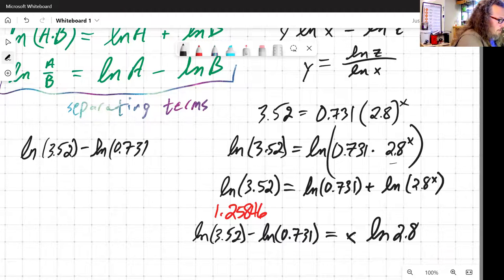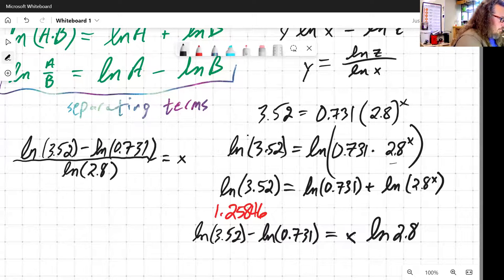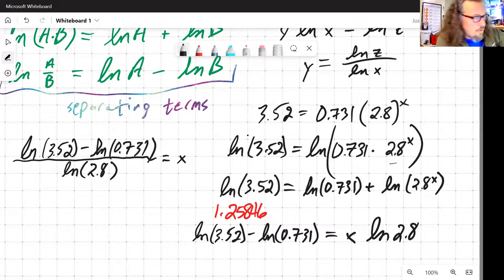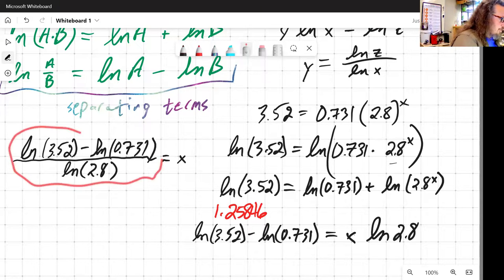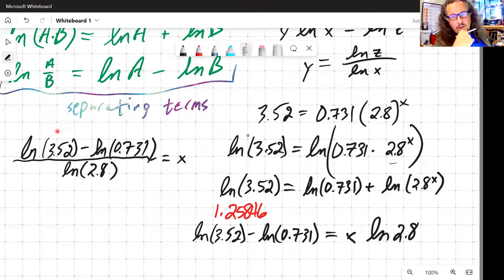And now we're pretty much done. So natural log of 3.52 minus natural log of 0.731 divided by natural log of 2.8 is equal to x. And at that point we can just plug things in and evaluate them. If you really want to, you can go ahead and put those back together, use those relationships to collapse that big term back down a little bit. But again, it's just a number, so we don't have to really worry about that.